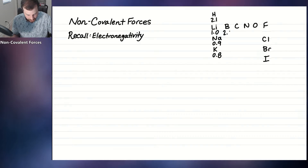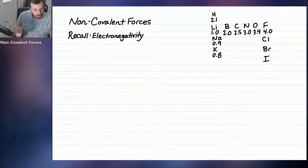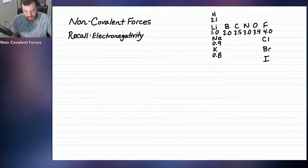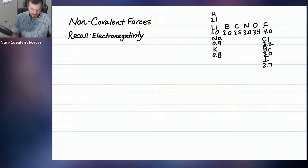Boron is 2.0, carbon 2.5, nitrogen 3.0, oxygen 3.4, fluorine 4.0. We increase as we move to the right, then decrease as we go down: chlorine is 3.2, bromine 3.0, and iodine 2.7. These are all approximate values.